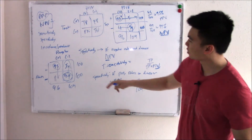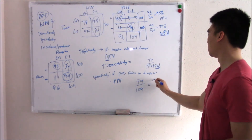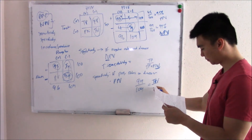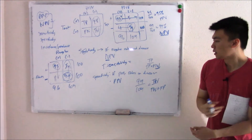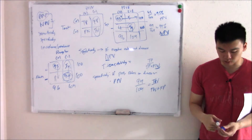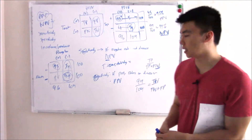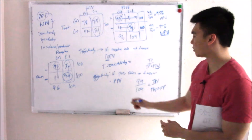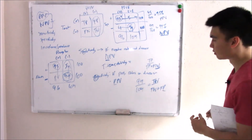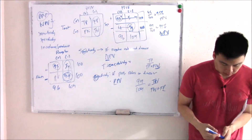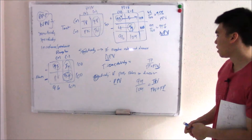Specificity has a P in its name. So positive predictive value starts with a P, and false positive starts with a P. Anytime someone talks about specificity, think positive predictive value and think false positive.